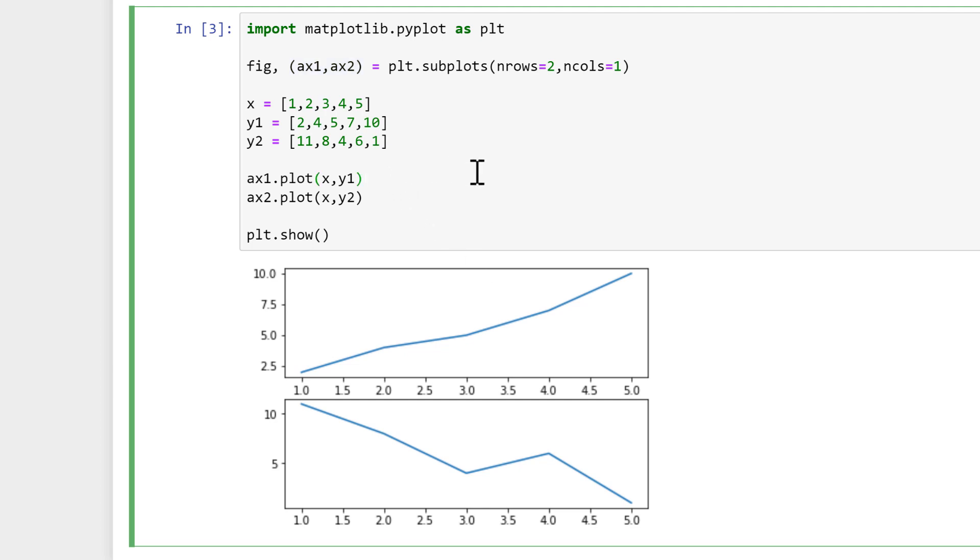And we can add in more subplots. I don't actually need the labels here, so I can just put in the numbers, and I'll say we want two rows and two columns. Then we need more brackets in here.